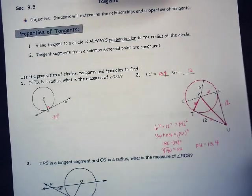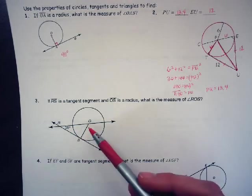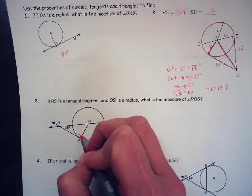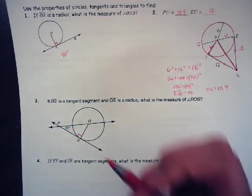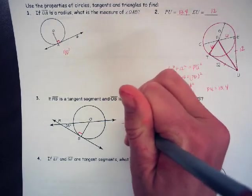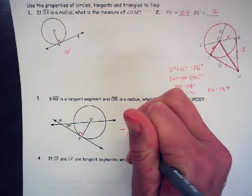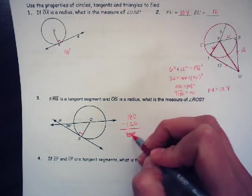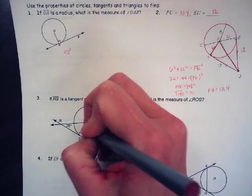Number three. If RS is a tangent segment and OS is a radius, what is the measure of angle ROS? So our theorem up there said that this makes a 90 degree angle. So if this is 35 and this is 90, then if I add those two together, I get 125. And I can subtract that from 180. We can go 180 minus 125, and we get 55 degrees.